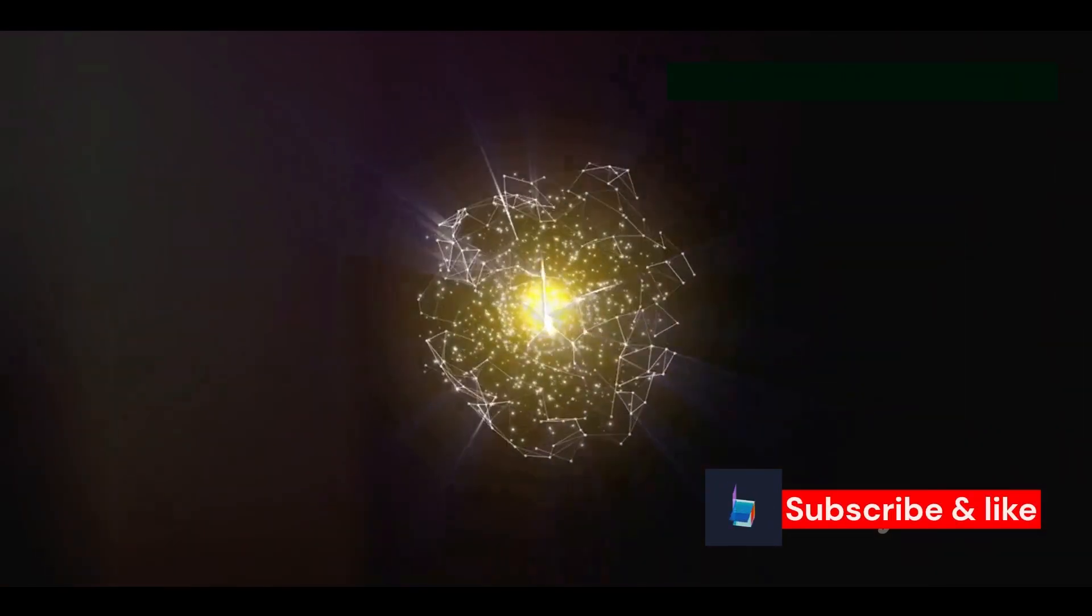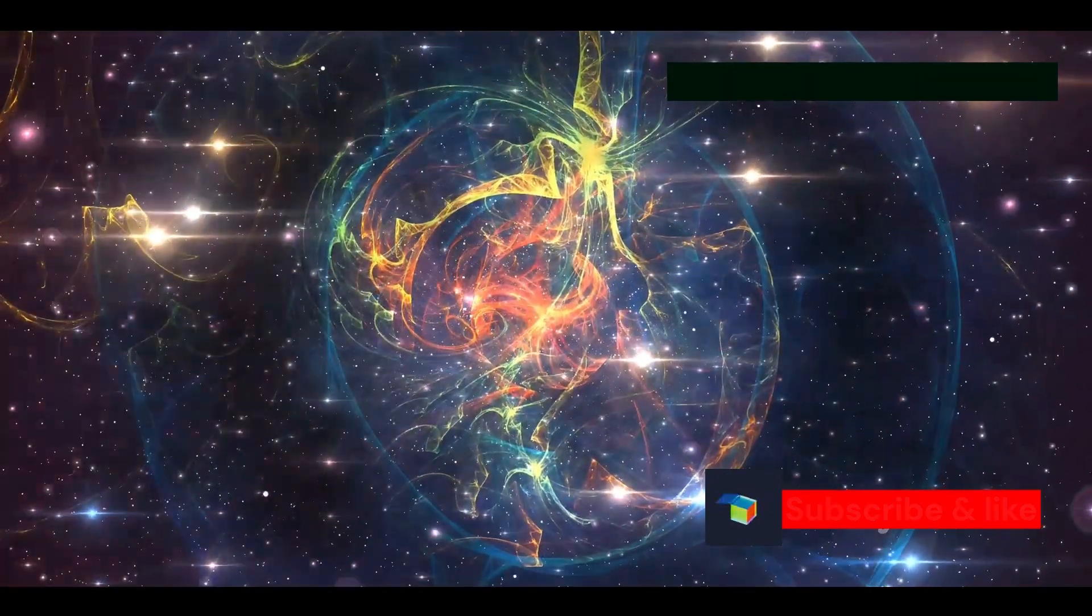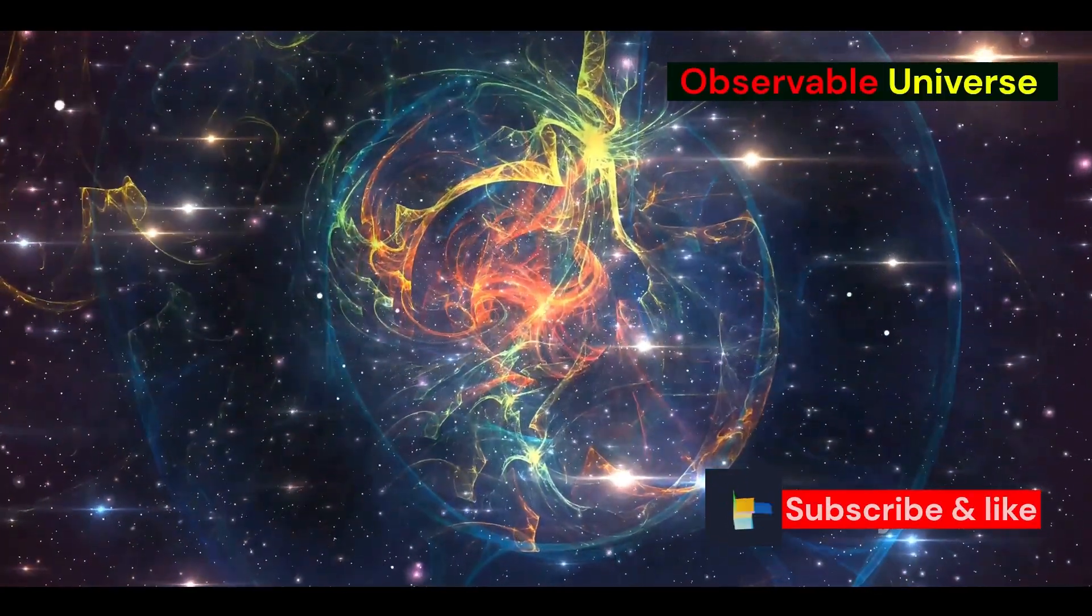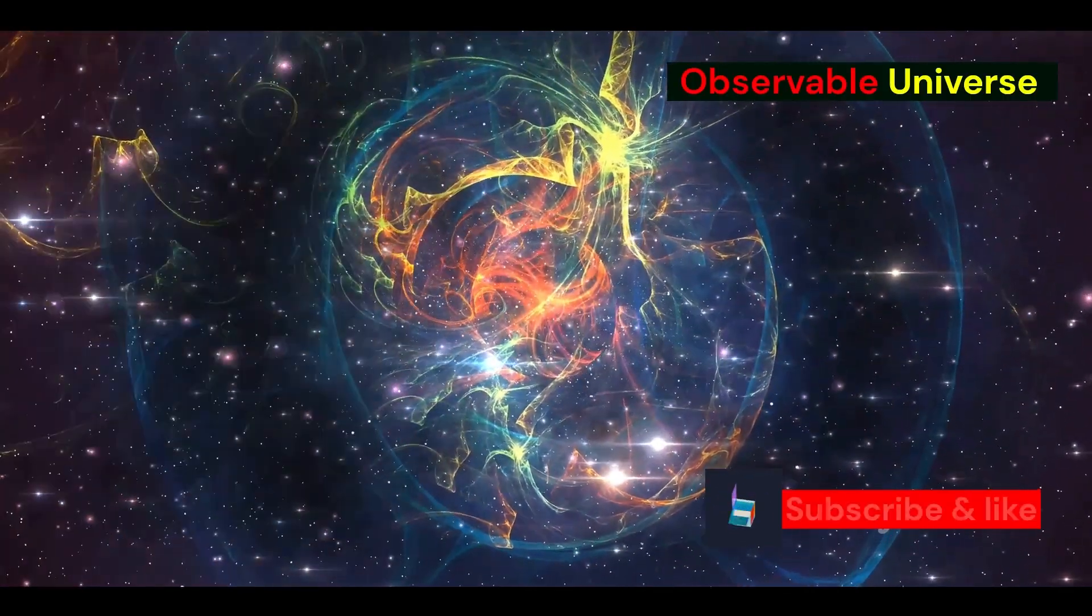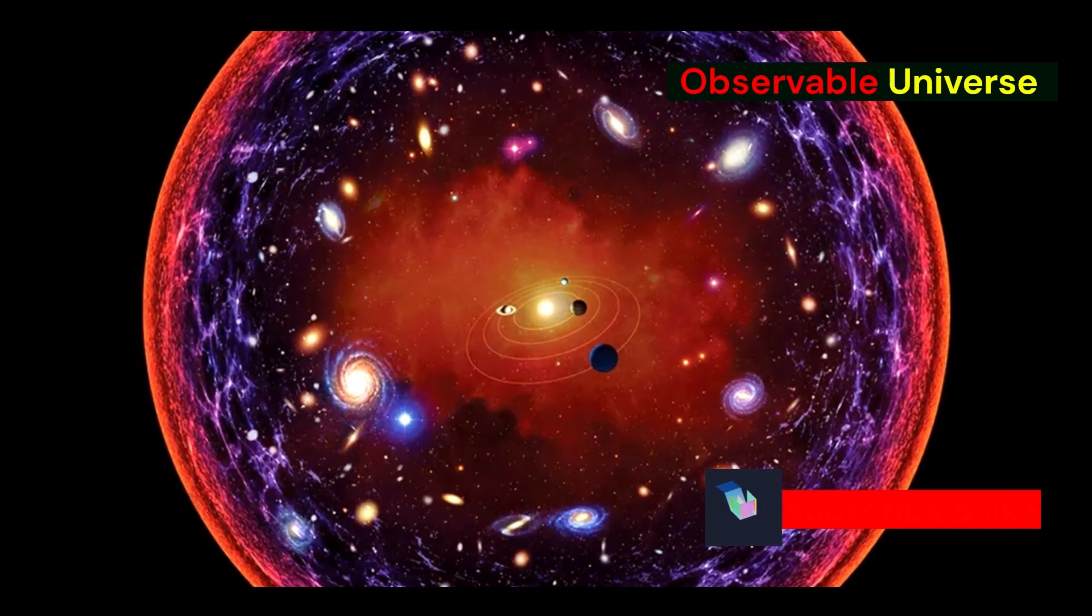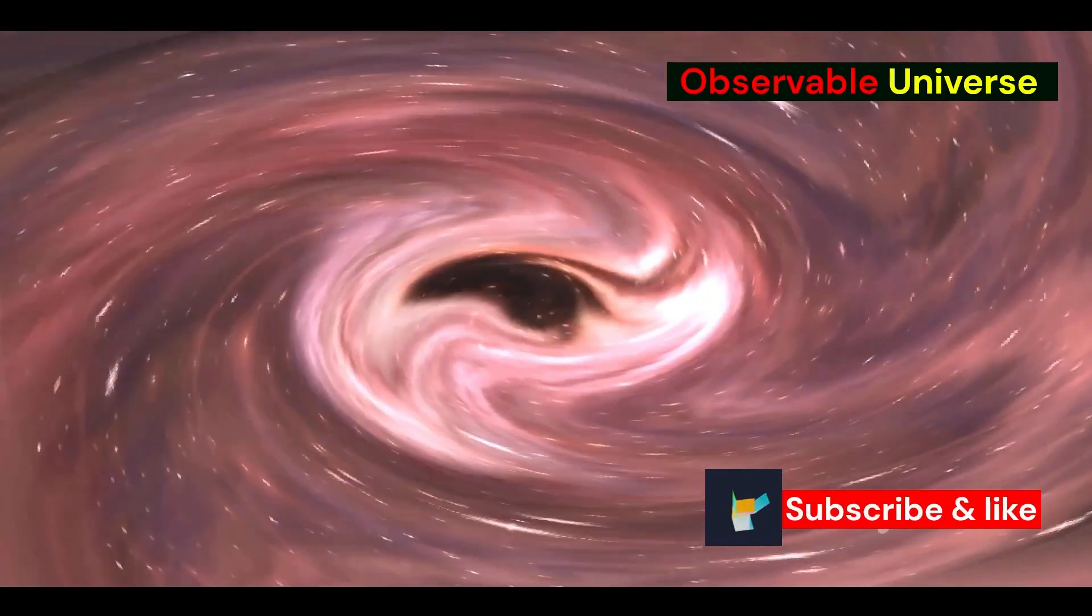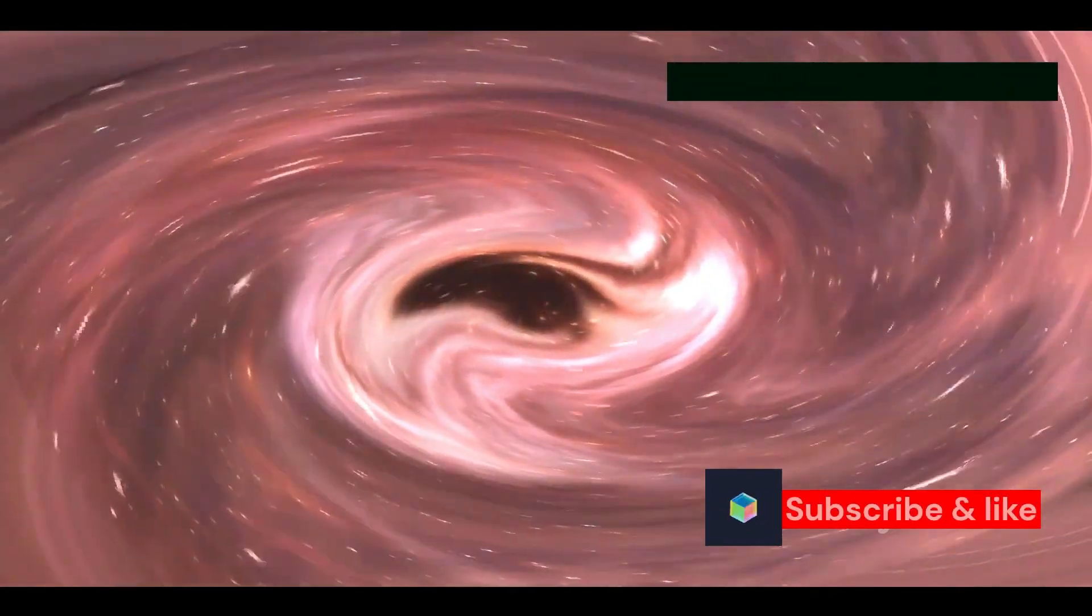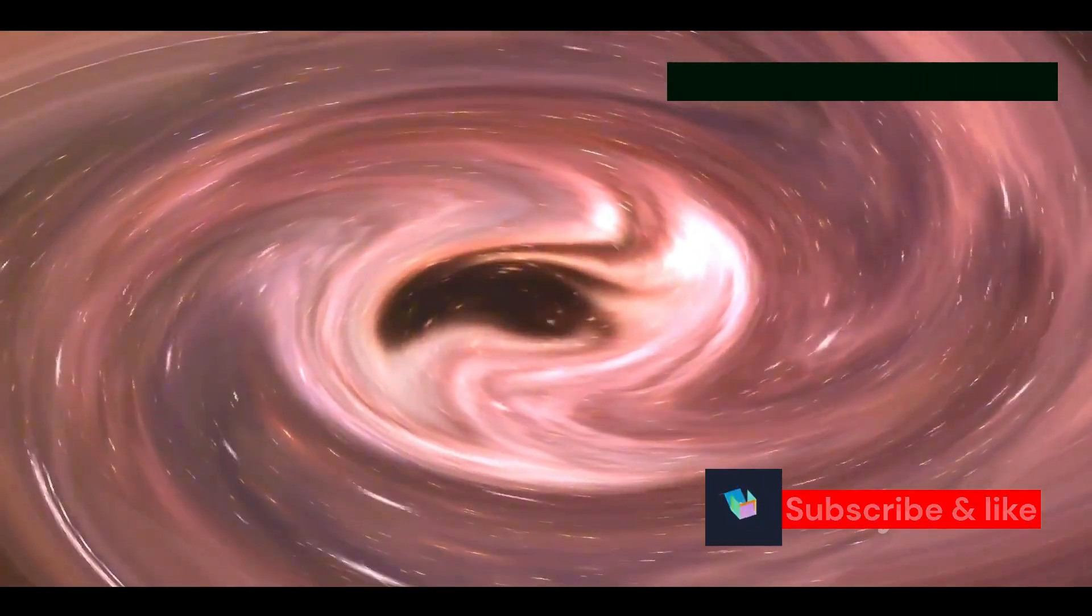String theory suggests the existence of extra spatial dimensions beyond the three we experience in our everyday lives. These dimensions are not visible to us because they are compactified, or curled up in such a way that they are hidden from our direct observation. These extra dimensions, curled up and hidden from view, could potentially harbor other universes, each with its own unique set of physical laws and constants. This means that what we perceive as the entirety of existence might just be a small part of a much larger, more complex reality.